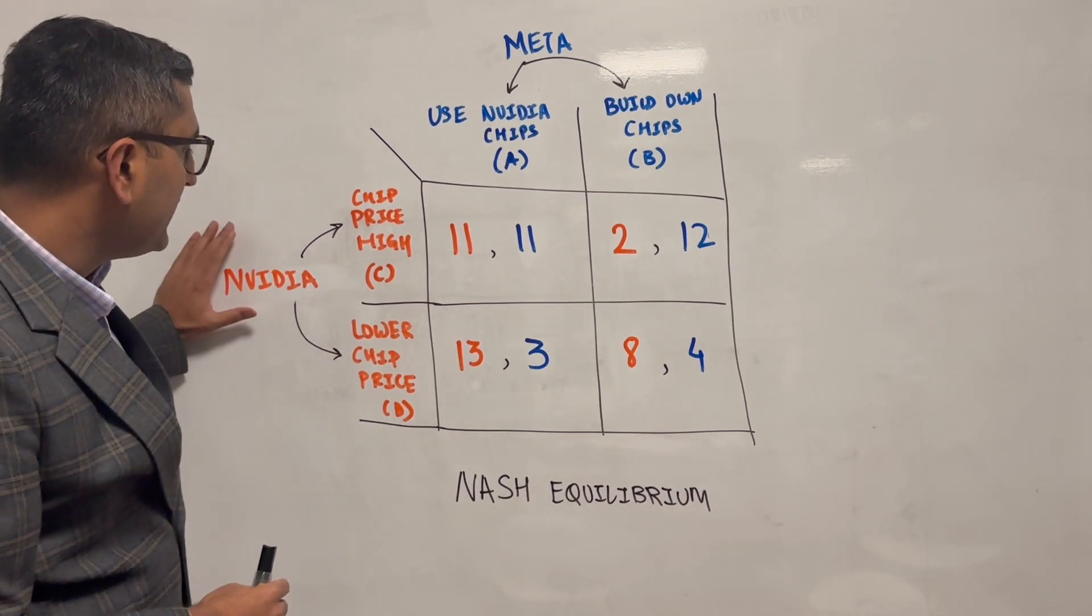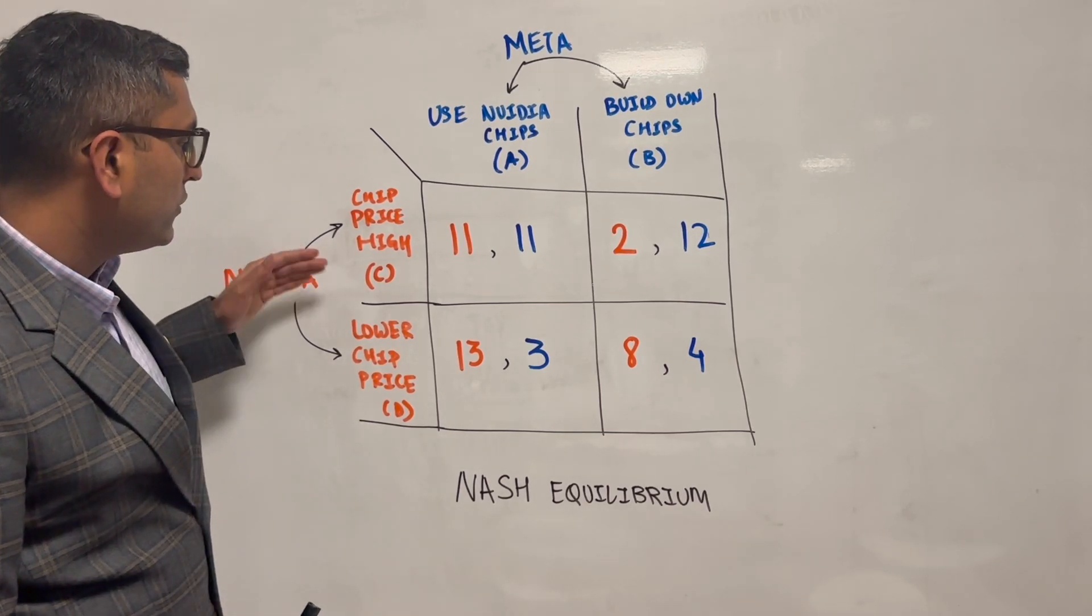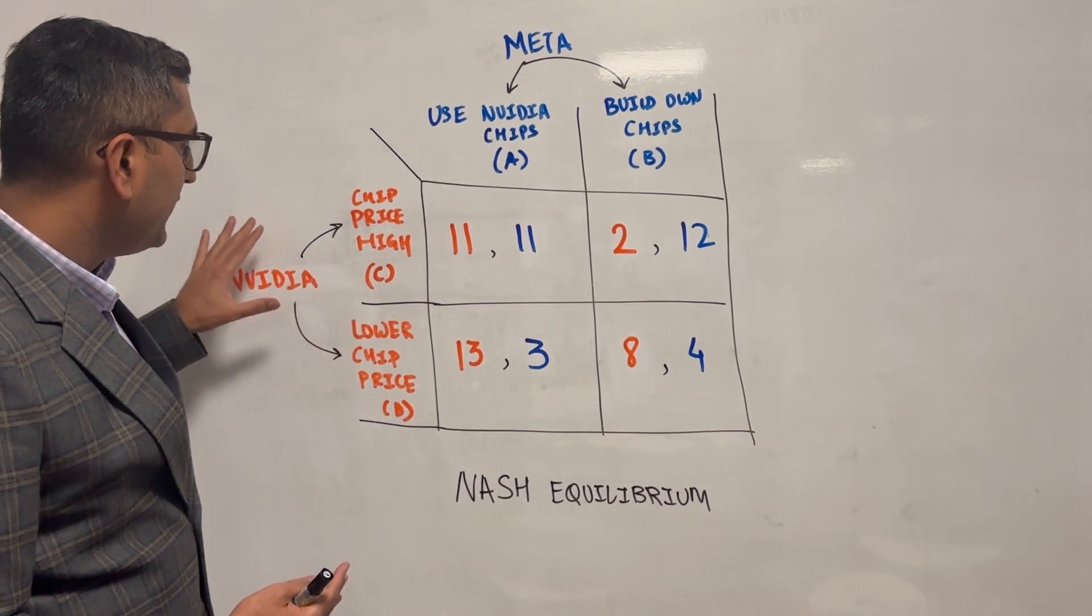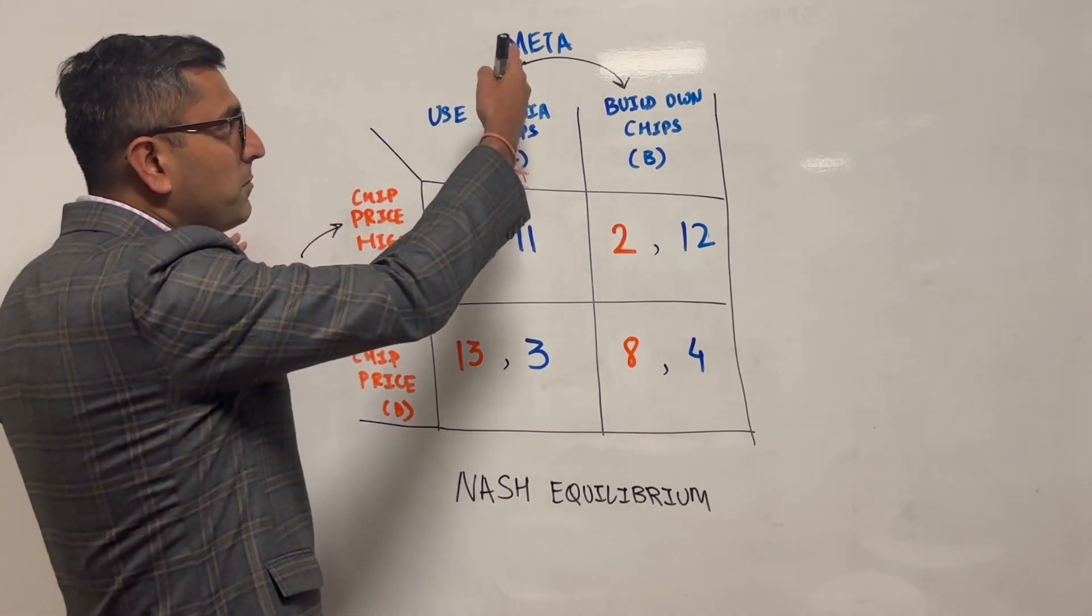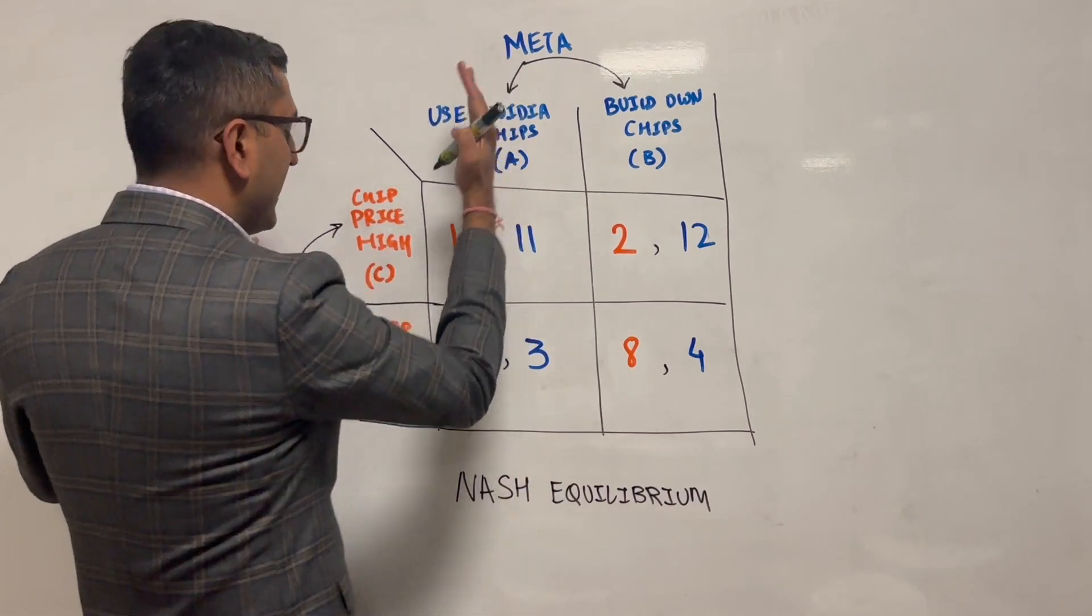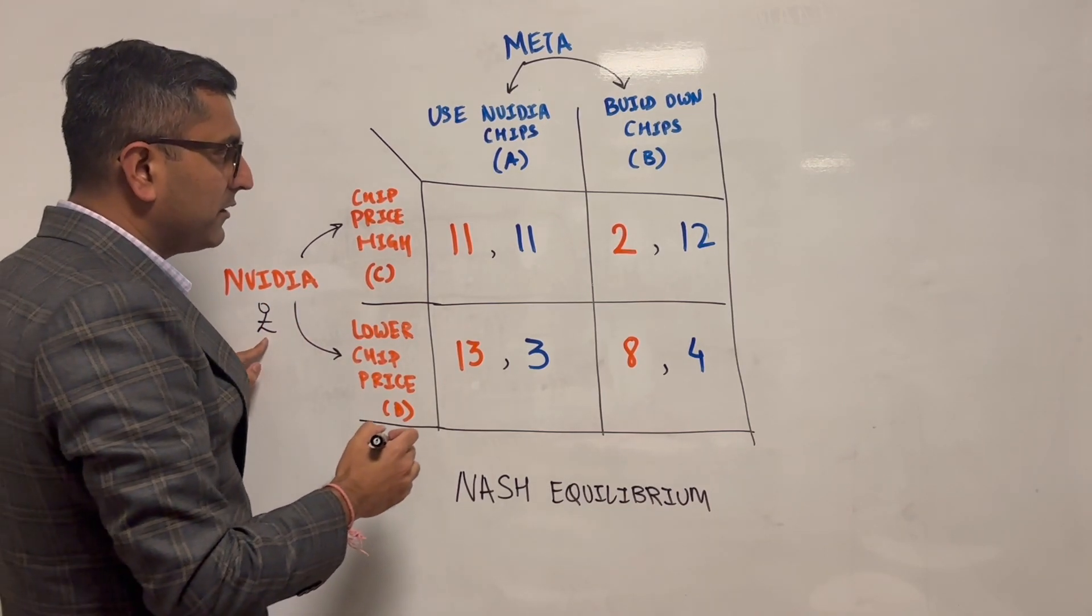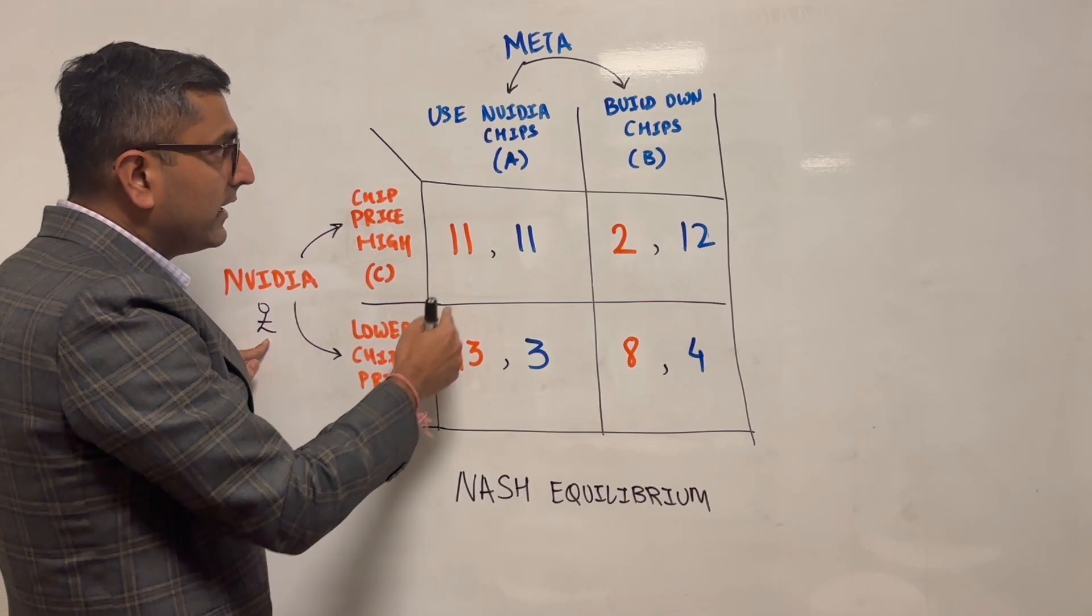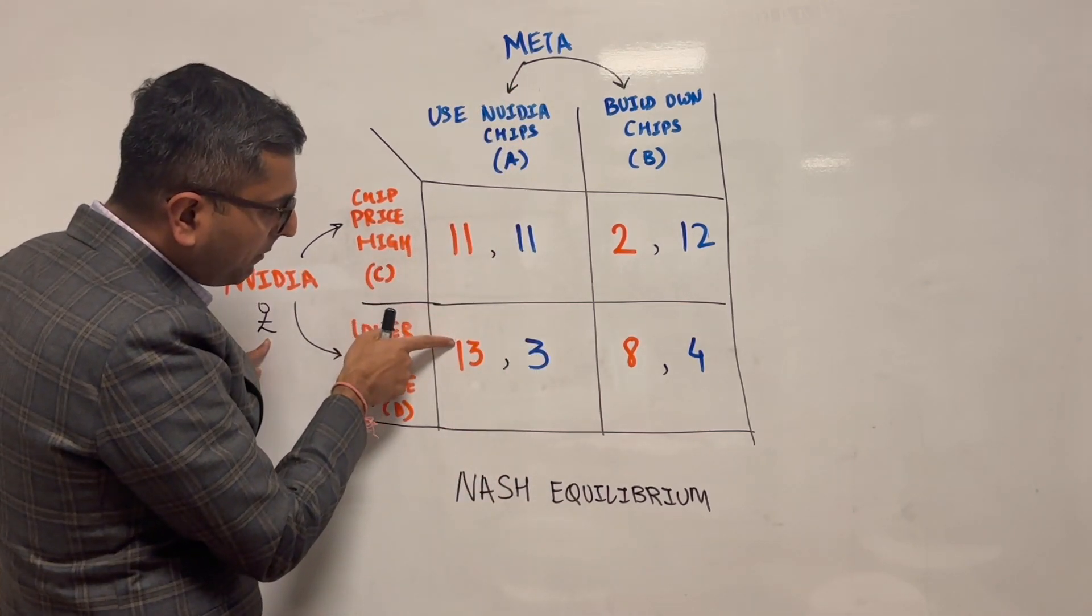Now assuming Nvidia is trying to make a decision, how would Nvidia know what to do? Choice C or choice D? The way Nvidia would make a choice between C and D is Nvidia would first assume, let's assume Meta is going to go with choice A. They're thinking from Nvidia's perspective. Nvidia's leadership is trying to make a decision. They would just assume that Meta goes with choice A, then they would compare the payoffs.